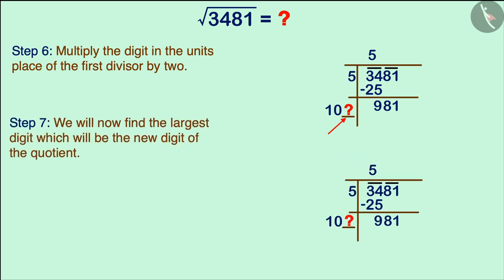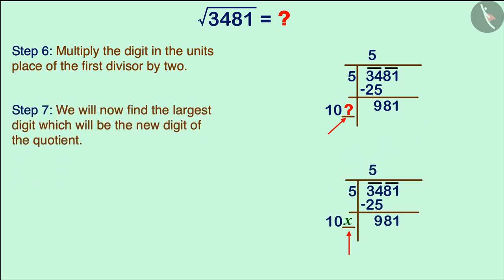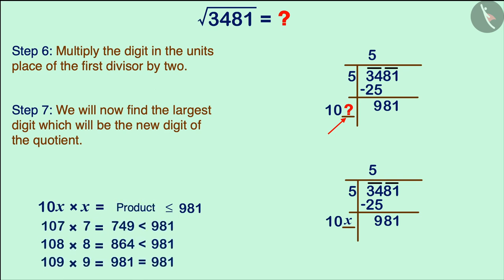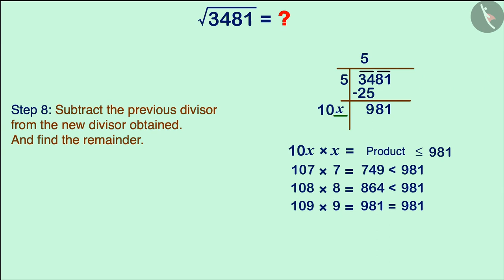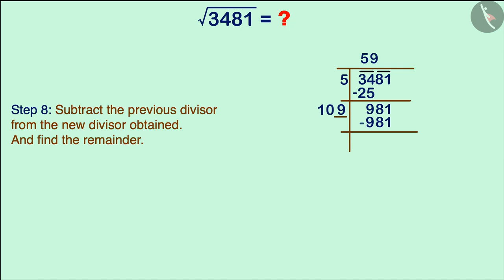To fill this blank, we will find the largest digit that will be the new digit of the quotient, and multiplying the new divisor by this new digit of the quotient, we get less than or equal to the composite number. Find this number by placing different numbers. We got 109 times 9 which equals 981, which equals the new composite number. Now write the number 9 in the blank space of the divisor because 109 times 9 equals 981. Therefore, the new digit of the quotient will be 9.